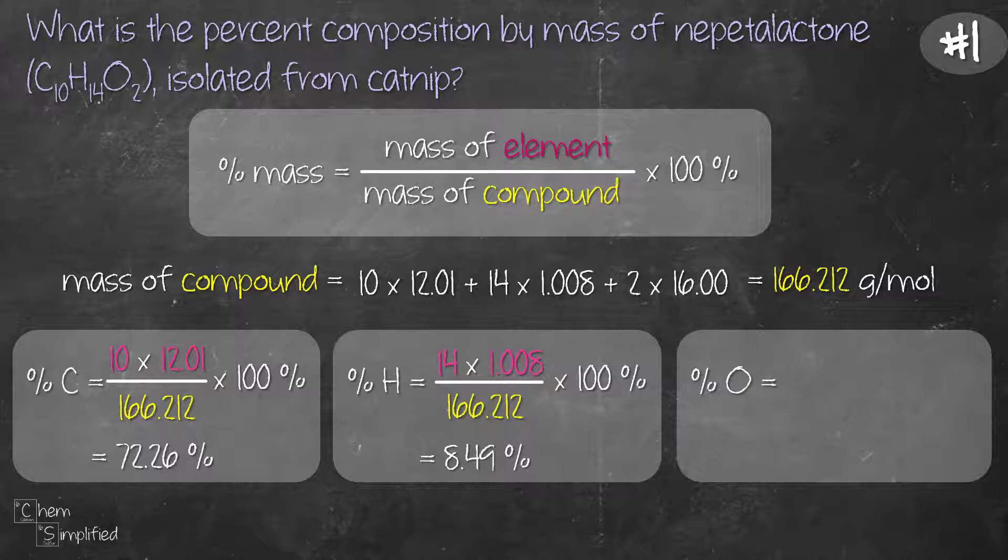And we repeat the same thing for oxygen. Now we have 2 times 16 divided by 166.212 times 100 and we get 19.25 percent.